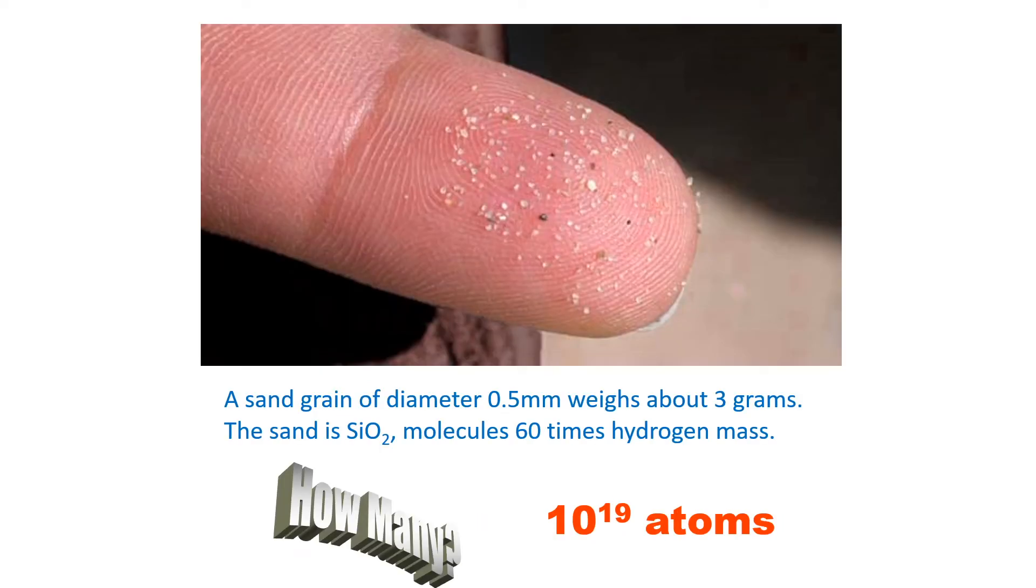How many atoms are there in everyday objects, going all the way up in scale to the universe, that we want to consider? What about our grain of sand, back from our earlier zoom-in to matter? A sand grain of diameter half a millimeter weighs about three grams. If you imagine it's made of silicon dioxide, a molecule 60 times hydrogen mass, you can estimate that a typical grain of sand has about 10 billion billion atoms. And so, thinking of a grain of sand, you get a sense of how tiny an atom truly is.